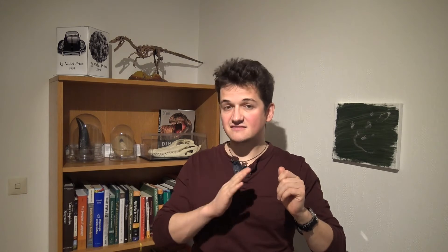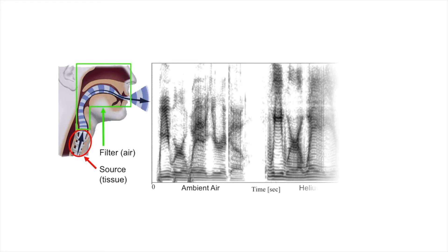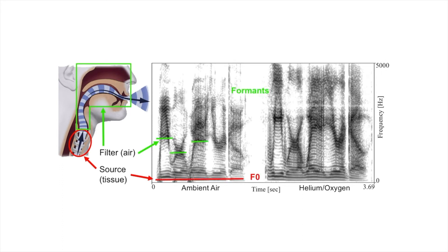If you record somebody inhaling either normal air or heliox, the difference between the two recordings is simply the formants and not the vibrating tissue, because it affects the speed of sound in an atmosphere but doesn't affect our tissue. So basically, if you inhale heliox, your tissue vibrates at the same rate, but the resonances go up because the speed of sound in this atmosphere is quicker. Here is Tecumseh saying the same sentence twice — once inhaling normal air and once heliox: 'We were away a year ago. We were away a year ago.' The fundamental frequency stays the same in both atmospheres, but the formants shift up. And like this, we can see where the formants lie.